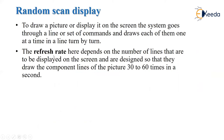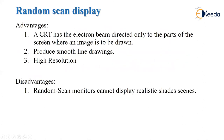The refresh rate for random scan display is 30 to 60 times per second. The advantages are that the electron beam is directed only to the part of the screen where the picture needs to be drawn, so it does not occupy the whole screen. It produces smooth line drawings since it uses lines, resulting in a smooth image. It also has high resolution — even if we zoom the image, the resolution remains the same. The disadvantage is that random scan monitors cannot display realistic shaded scenes, as shading requires pixel-based images.